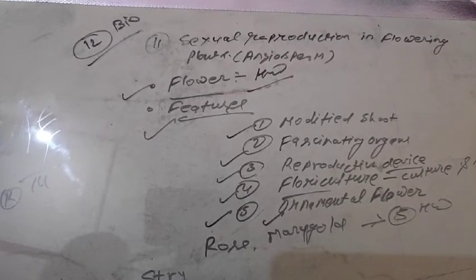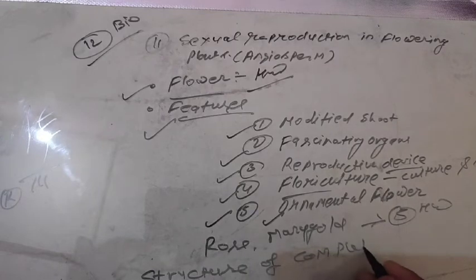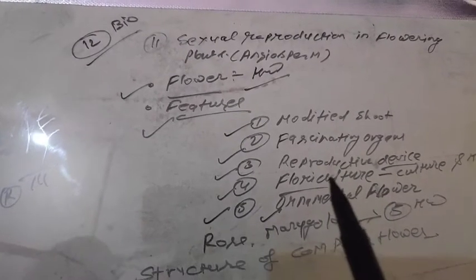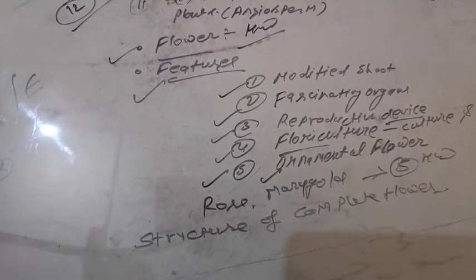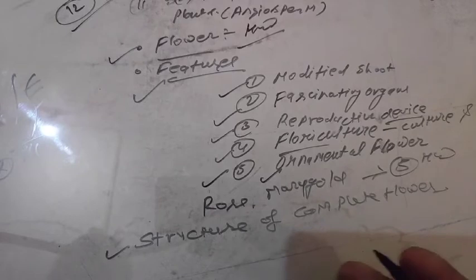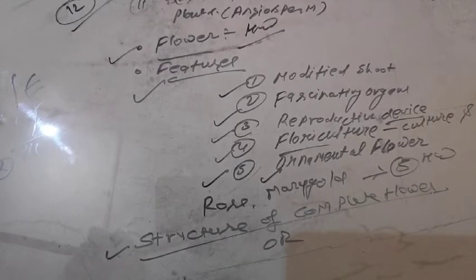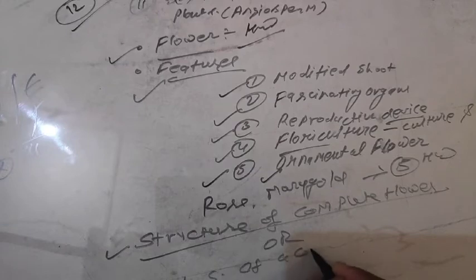The next heading is 'Structure of a Complete Flower.' A complete flower consists of all the necessary equipment for the reproduction process, like the anther, filament, stigma, style, petal, sepal, etc. In the examination, it may be asked as the LS — draw the LS of a complete flower. The LS of a complete flower is given in your book, so keep it in mind.